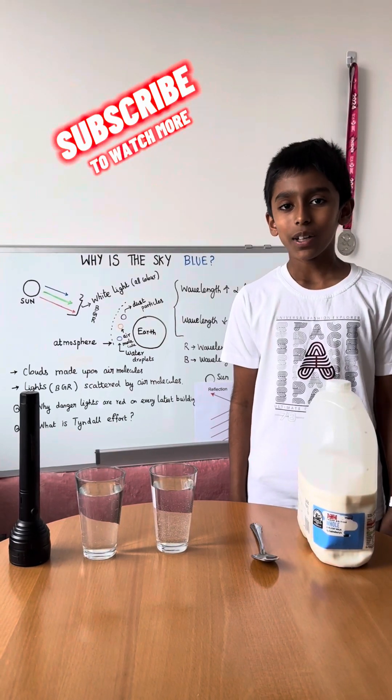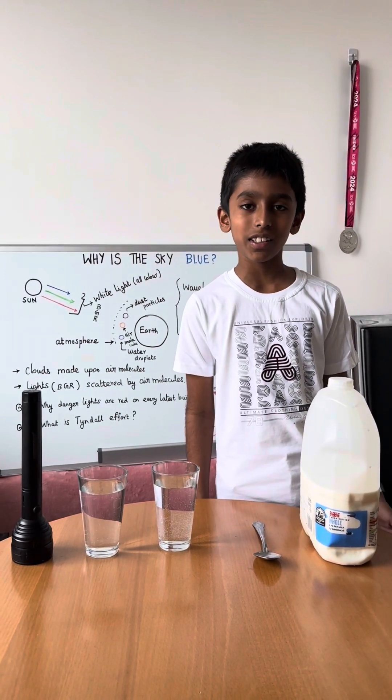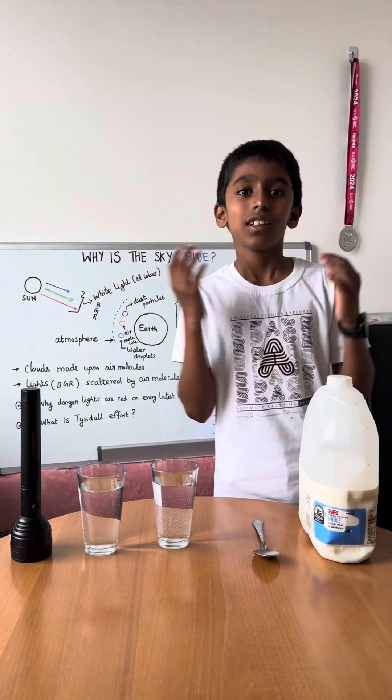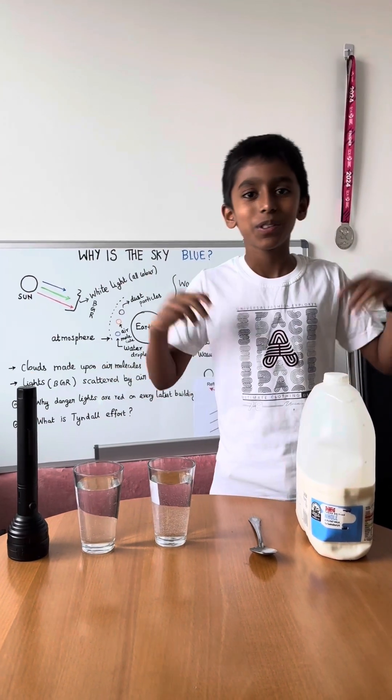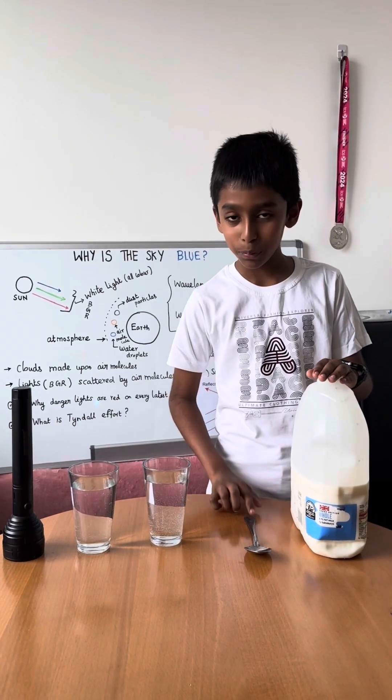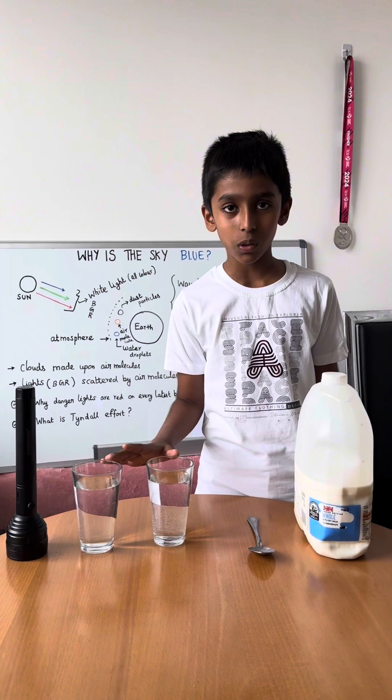Hi friends, welcome to this channel called Kids Engineering. Today the experiment name is why is the sky blue. Now the required materials: milk, a spoon, two glasses of water, and a torchlight.